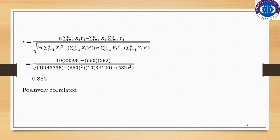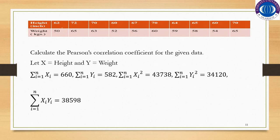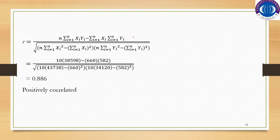Since n equals 10 (there are 10 observations), by substituting all the calculated values into the Pearson correlation coefficient formula, we get r = 0.886, which indicates a strong positive correlation between height and weight.